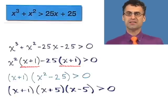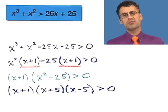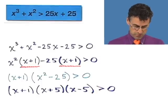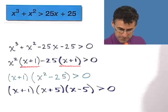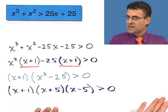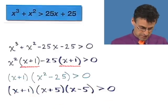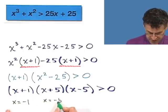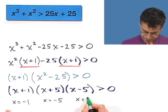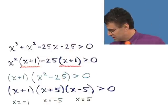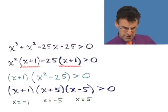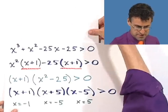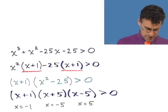We've got three linear factors multiplying to give something positive. First, find where each factor equals zero — those are the critical points. Setting each factor to zero: this expression equals zero when x equals negative 1, x equals negative 5, and x equals 5. Now think about a number line, because we need to visualize this.